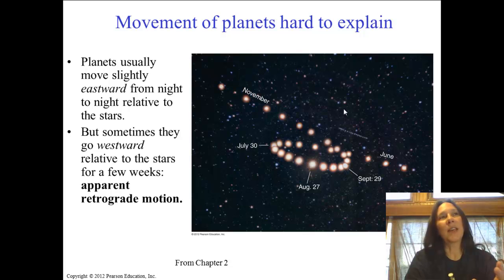So one of the things that if you put the Earth at the center and have the planets orbit the Earth and the sun orbit the Earth and the stars orbit the Earth, one of the things that doesn't make sense with the planets orbiting the Earth is the planets don't always go in one direction.